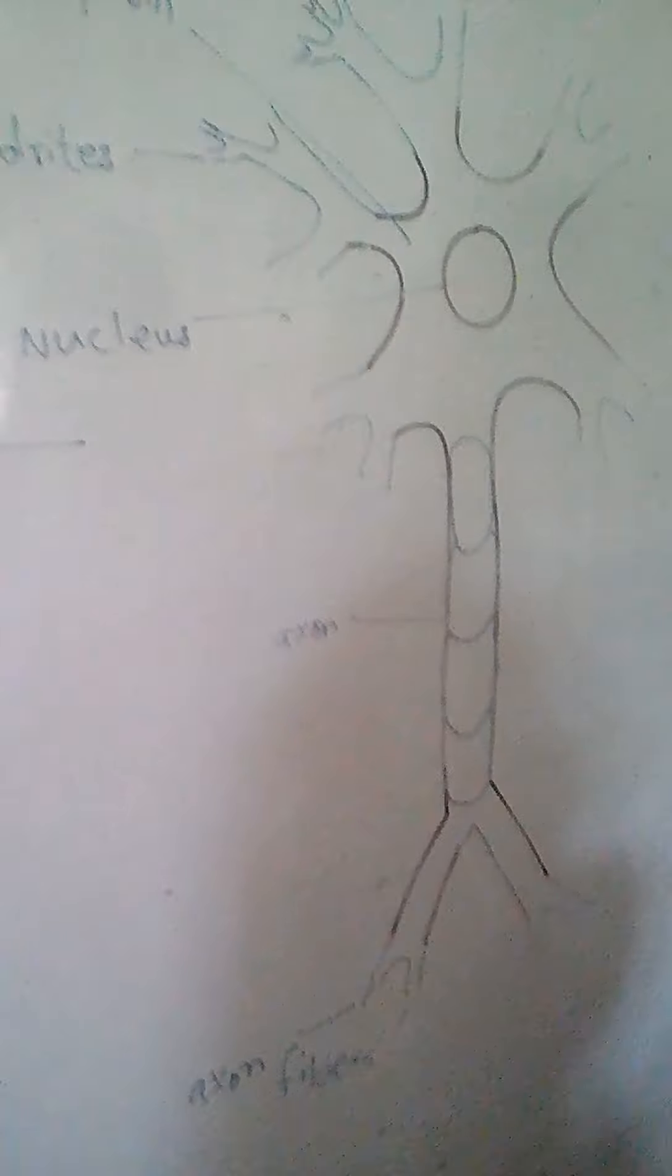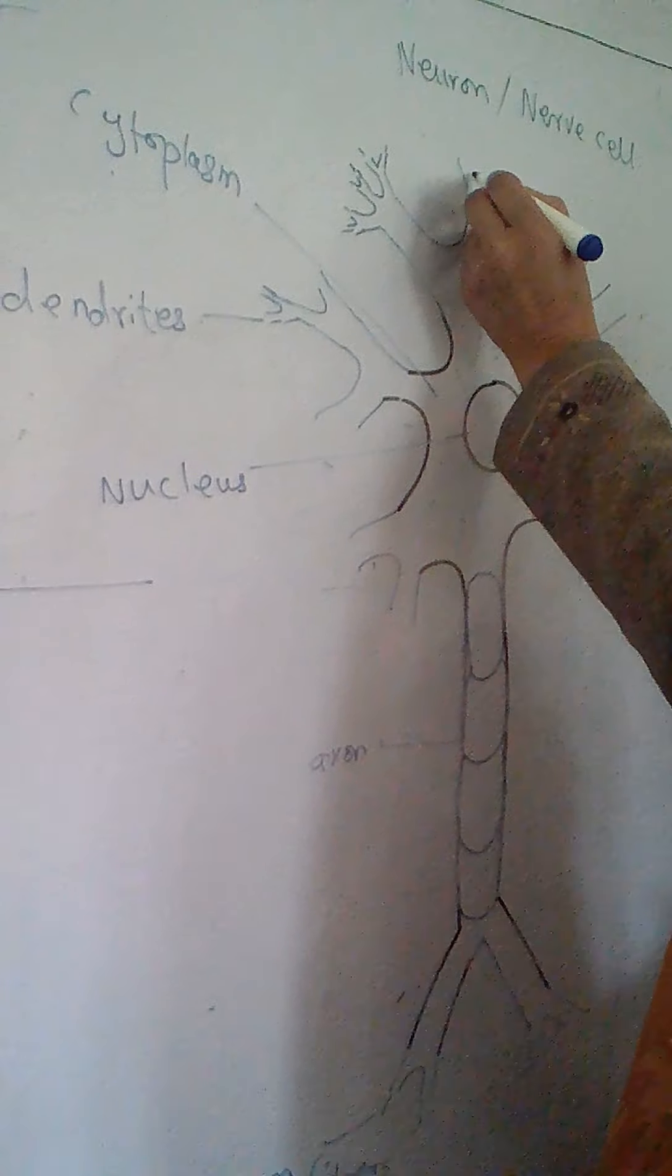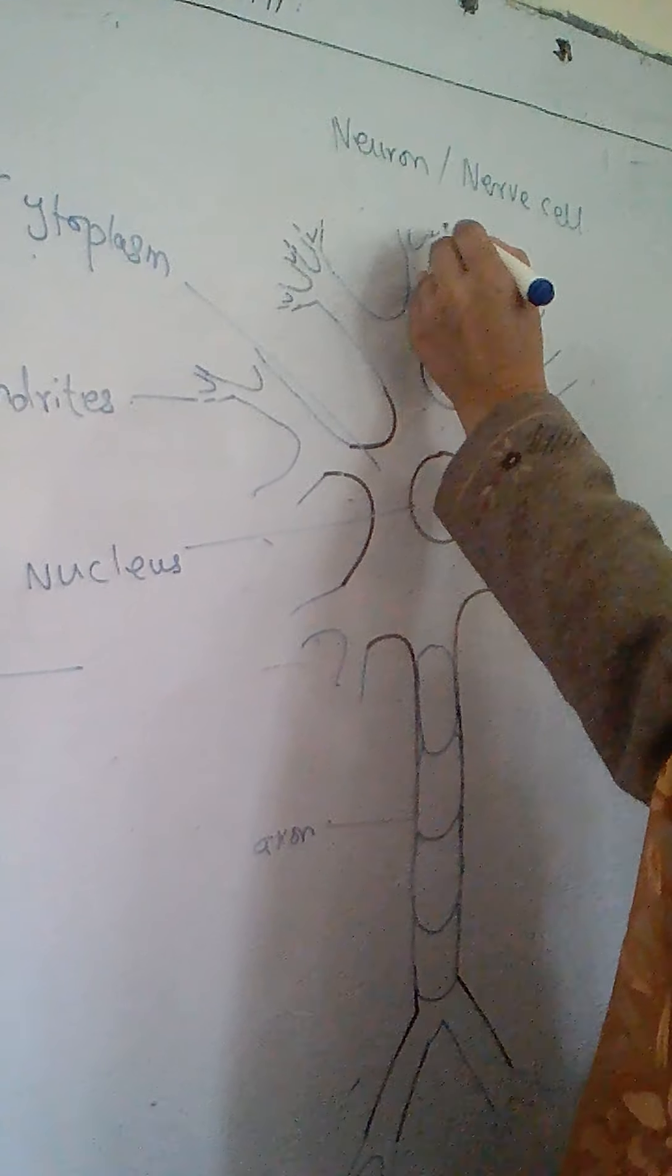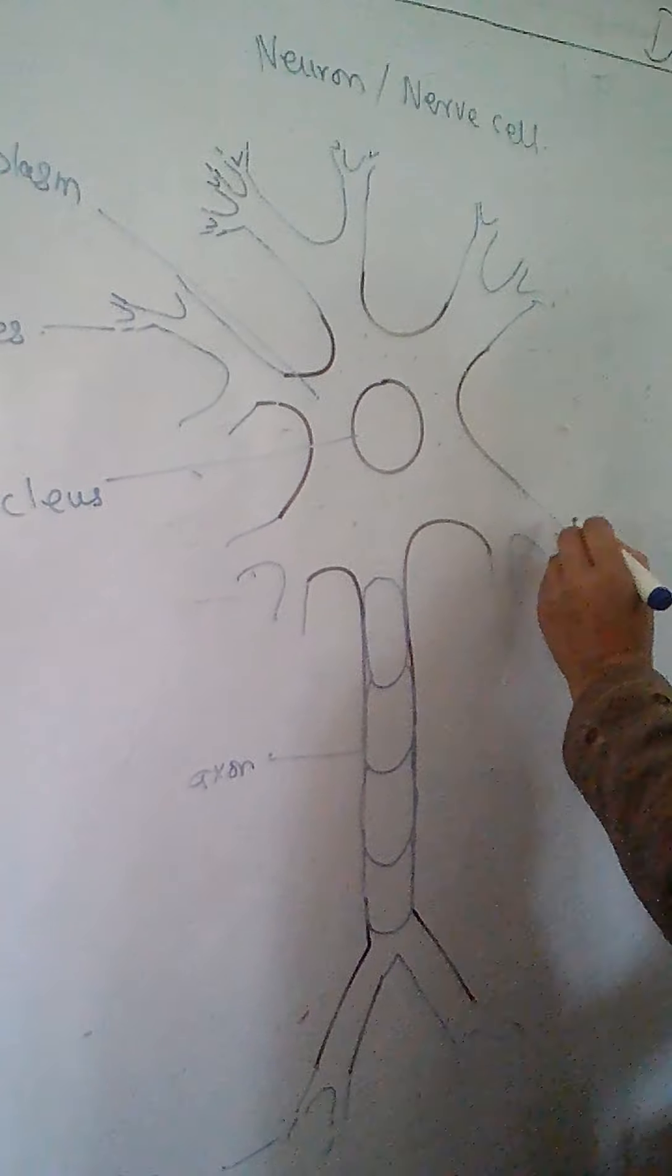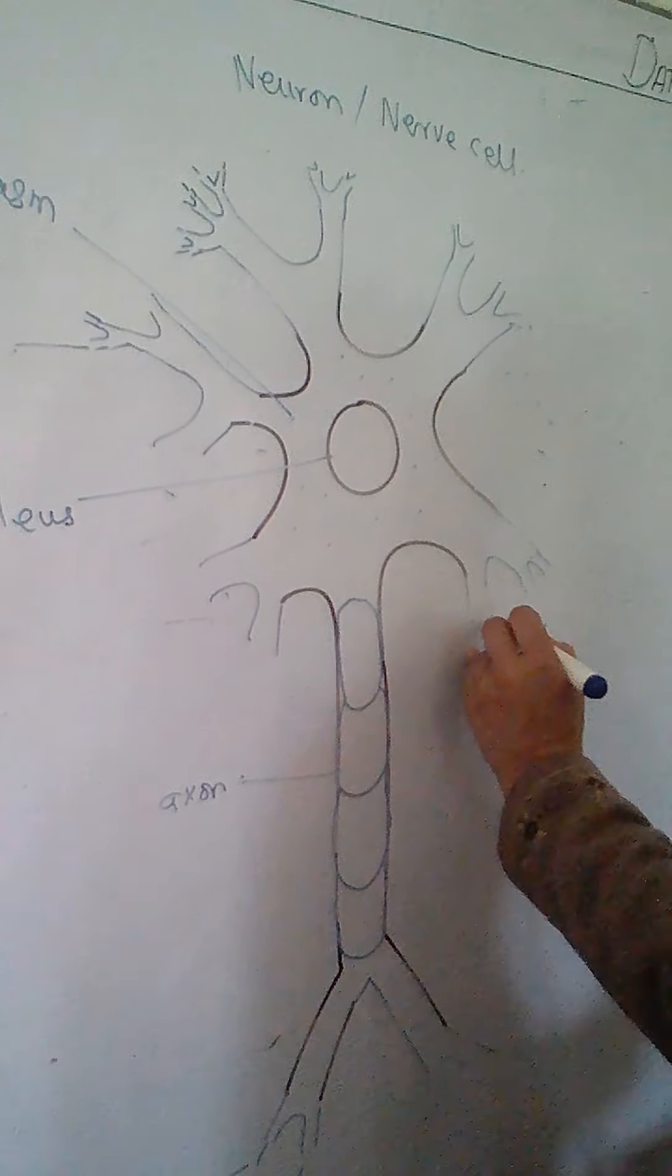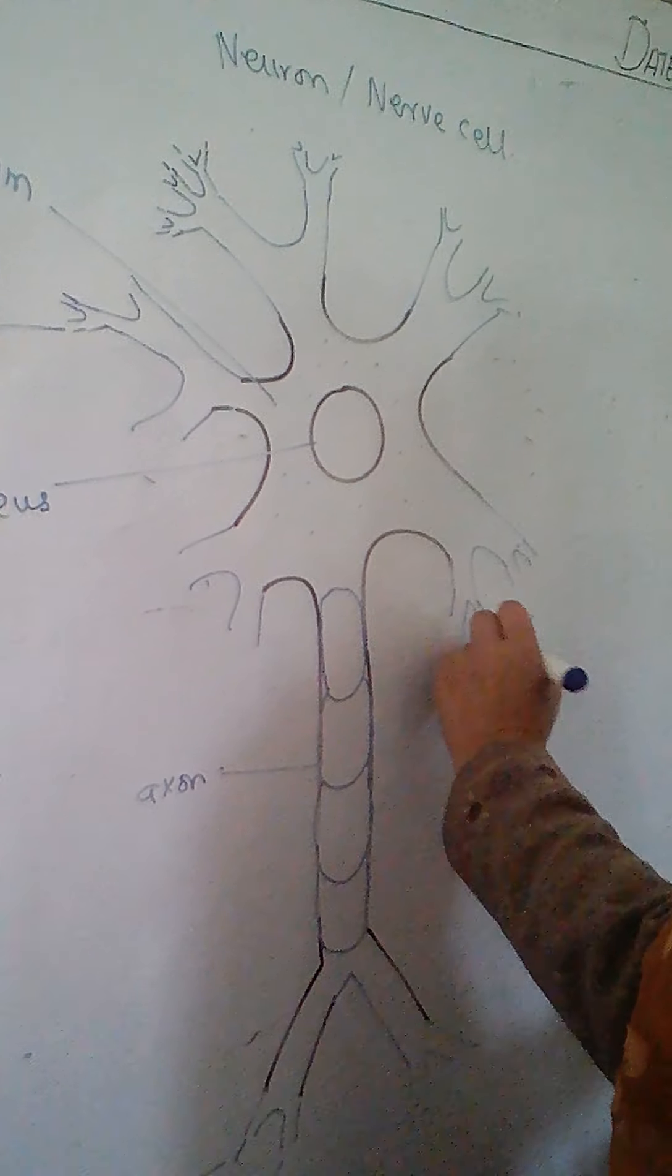This is a very simple diagram. And I am sure that you will be able to draw it very effectively. As I have just told you, these are the dendrites, the sensitive part of the neuron.